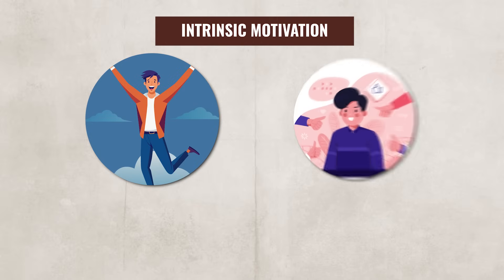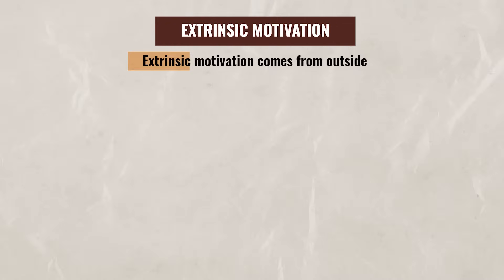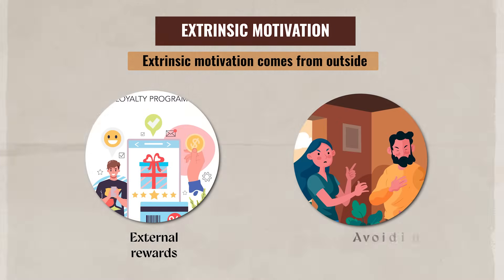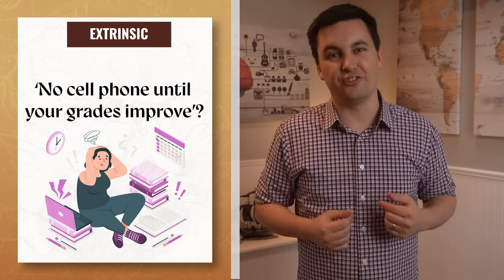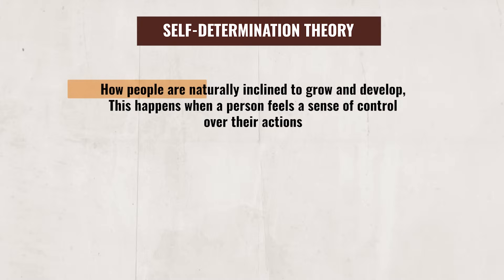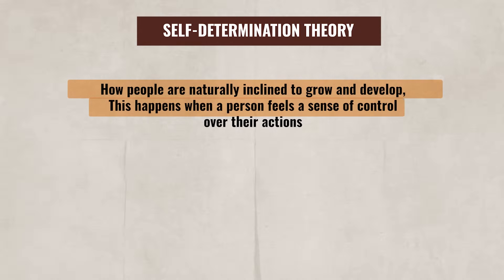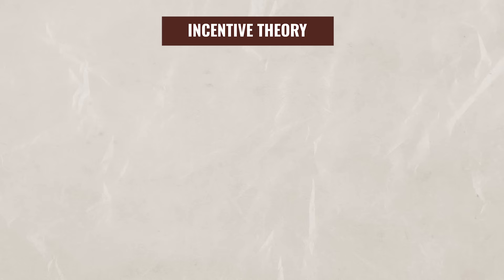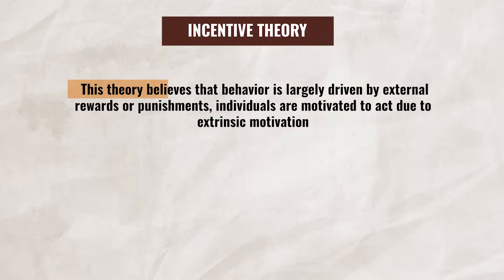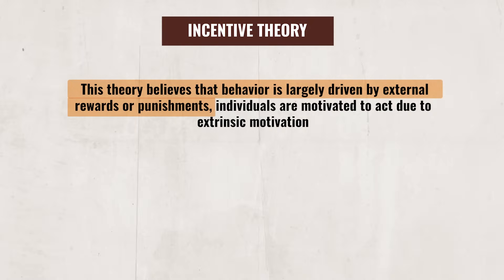One theory that looks at both internal and external factors is the self-determination theory, which states that people can be motivated by intrinsic or extrinsic motivation. Intrinsic motivation comes from within — for example, enjoyment or personal satisfaction — while extrinsic motivation comes from outside, such as rewards or avoiding punishments. For example, studying because you genuinely love psychology is intrinsic, but studying because your parents took away your cell phone until your grades improve — that's extrinsic. The self-determination theory focuses on how people are naturally inclined to grow and develop, which happens when a person feels a sense of control over their actions, feels capable of achieving their goals, and feels connected to others. The incentive theory also looks at intrinsic and extrinsic motivation, but believes that behavior is largely driven by external rewards or punishments.